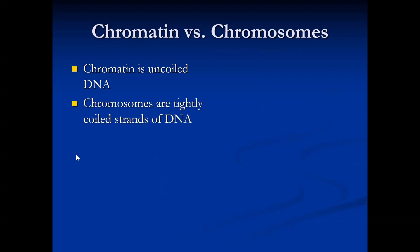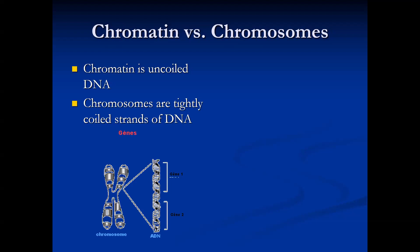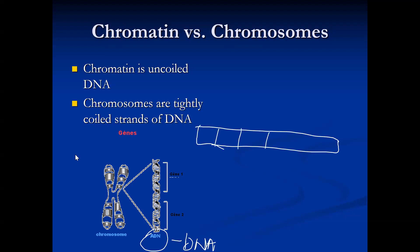Chromosomes are tightly coiled strands of DNA, due to the histone protein that tightly coils them. In the chromosome, there is DNA, and within the DNA there are genes. There is gene one, gene two, gene three, gene four, and so on continuously. In humans there are about 25,000 genes.